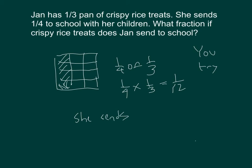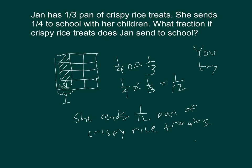Did you write out a sentence? Be sure to do that. I should have labeled the area model — that's not one fourth, it should be one third. And there's one fourth. And the whole thing is one.